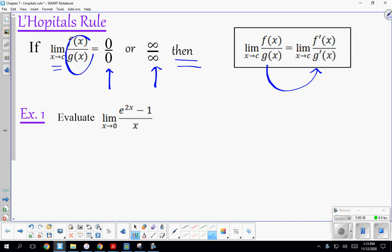We take the derivative at the top, the derivative at the bottom. We don't actually apply the quotient rule because we're not actually finding the derivative of anything.